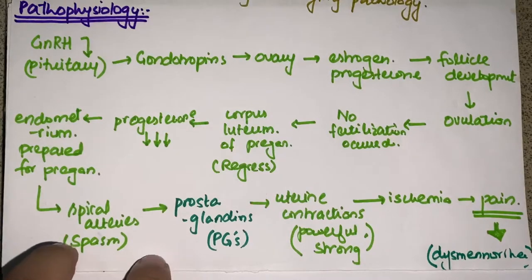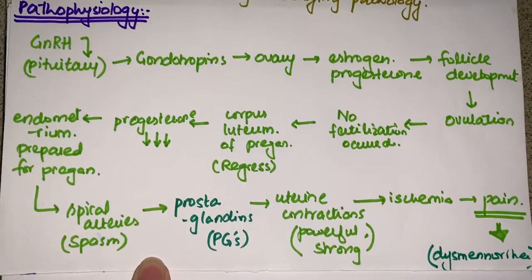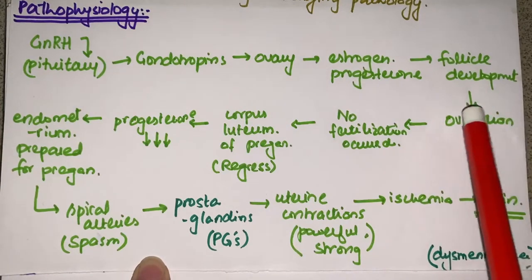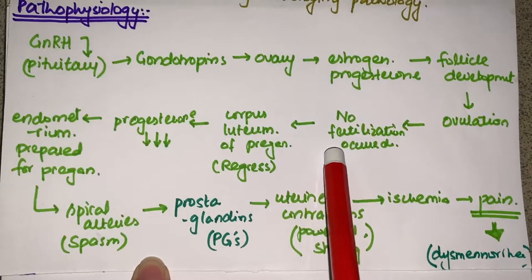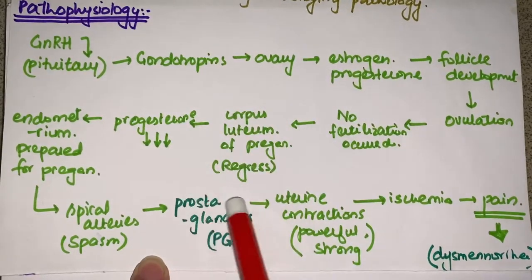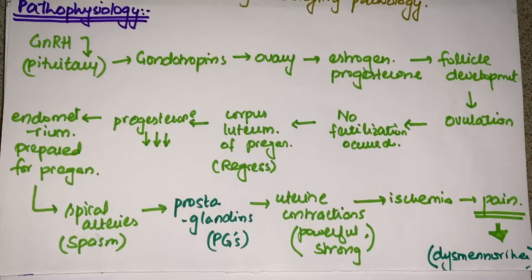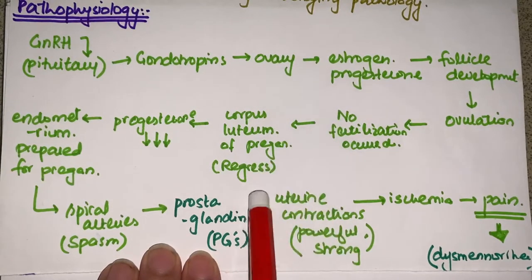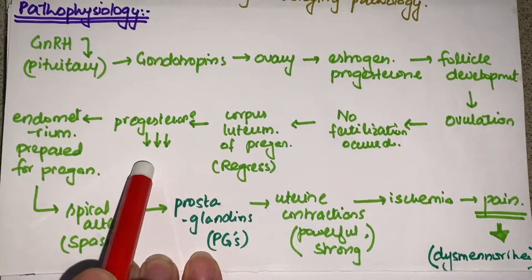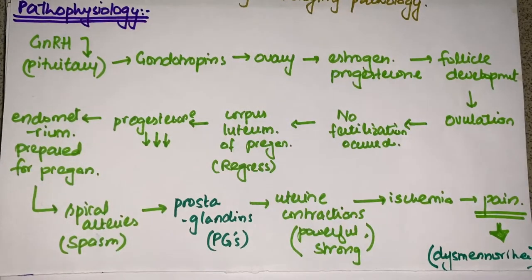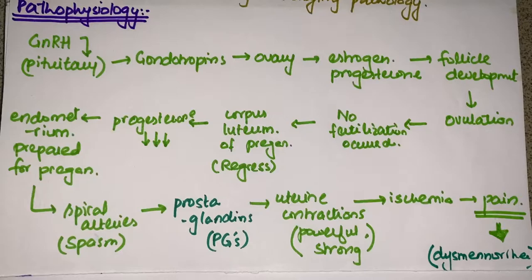Once ovulation has occurred, if no fertilization takes place, the corpus luteum — the ovarian cells that support pregnancy — begins to regress because fertilization has not occurred. As the corpus luteum regresses, progesterone levels in the body decrease. The endometrium, which was previously being prepared for implantation, now also starts to regress since it is no longer needed.